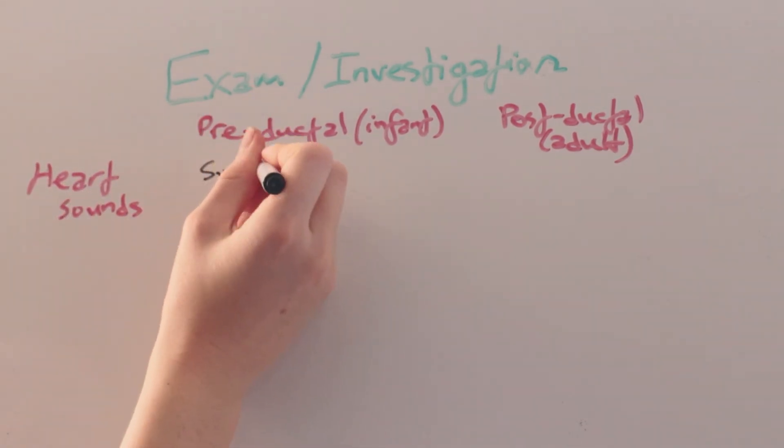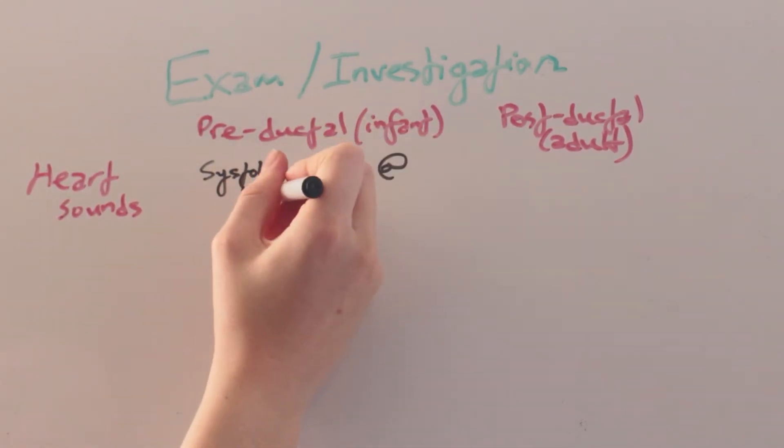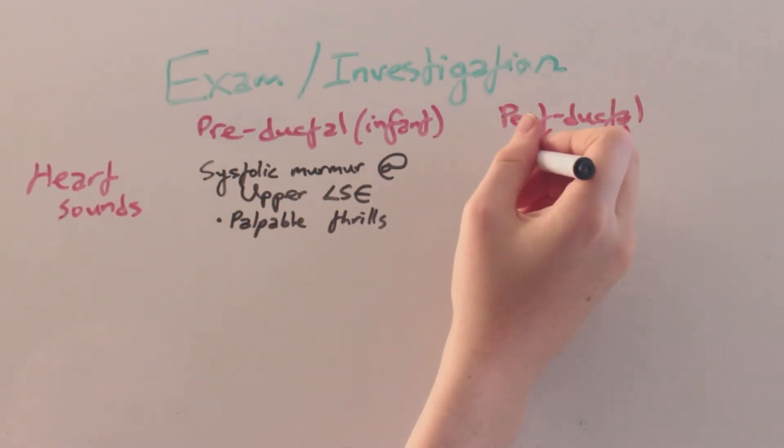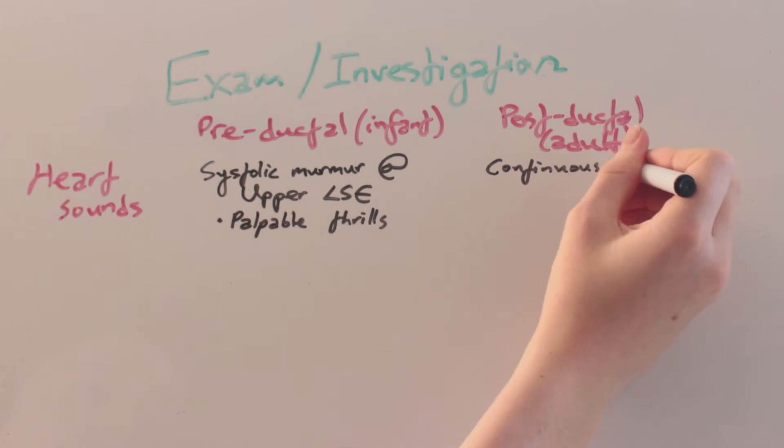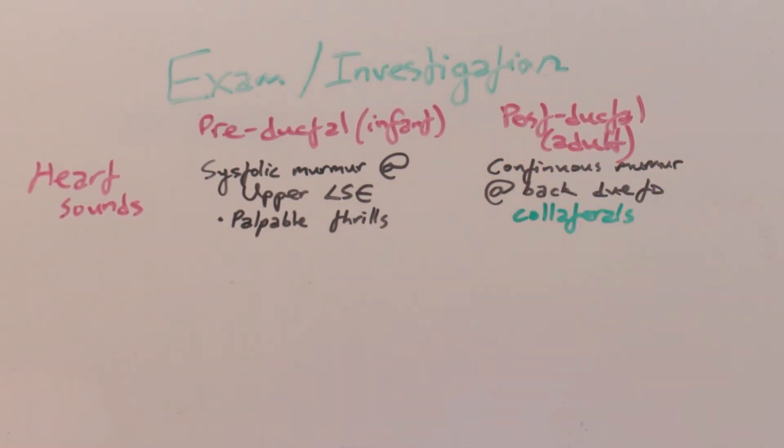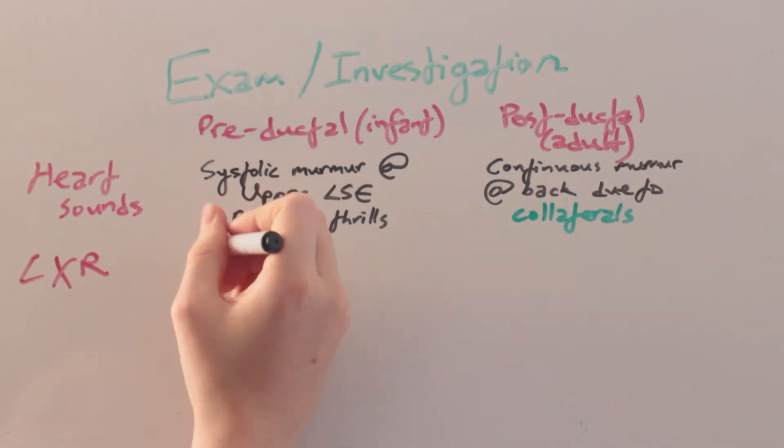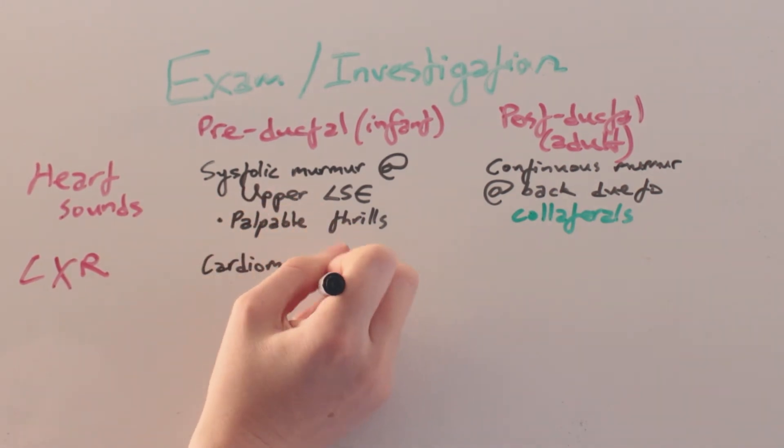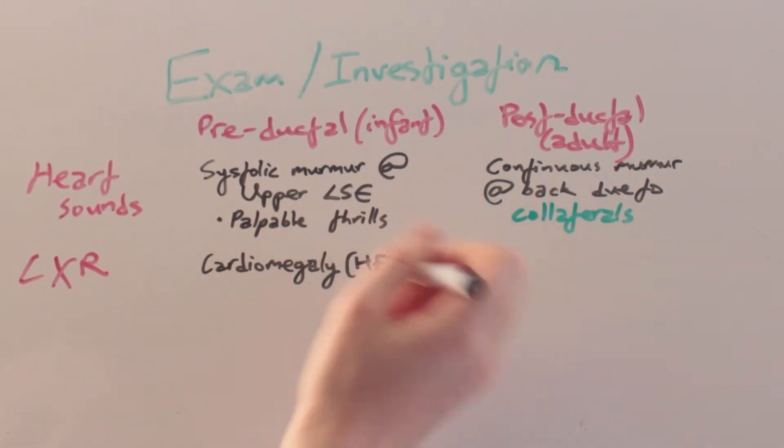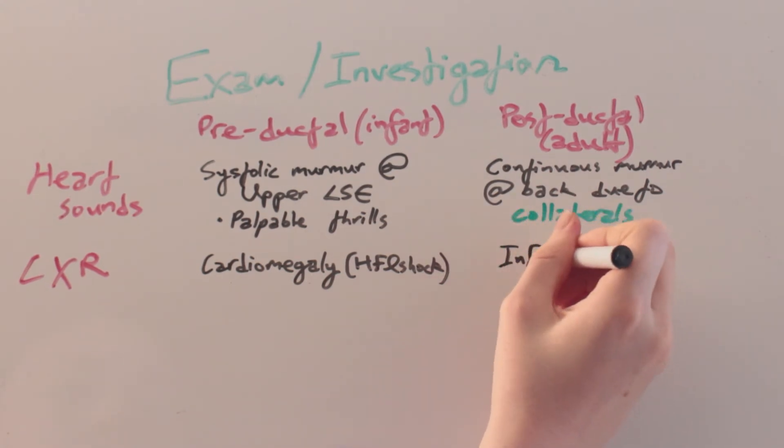Heart sounds in the infant may include a systolic murmur at the upper left sternal edge as well as palpable thrills. In the adult, we may hear a continuous murmur on the back due to flow through collateral vessels. The chest x-ray in infants will show cardiomegaly as a result of heart failure and shock, whereas in adults there is a characteristic sign of inferior rib notching.